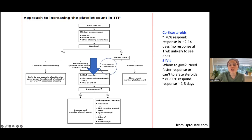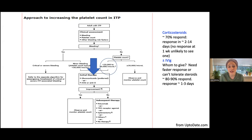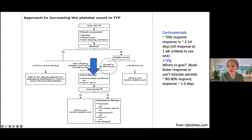Regarding steroids: the response rate is around 70% and it's pretty quick. If your patient is responding to corticosteroids, you will see this within one to two days, lasting up to 14 days. IVIG has an 80% to 90% response rate and also takes one to three days to have a response. You don't always need to give IVIG with steroids if steroids are working, but you can add it if you need a faster or more robust response.